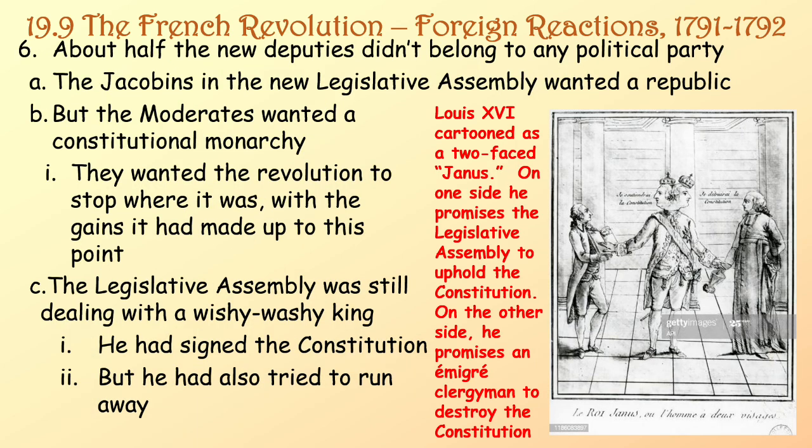About half of these new deputies didn't belong to any political party. The Jacobins in the new Legislative Assembly wanted a republic, but the moderates wanted a constitutional monarchy — they wanted the revolution to stop where it was with the gains it had made. The Legislative Assembly was still dealing with a wishy-washy king: he had signed the constitution, but he had also tried to run away.